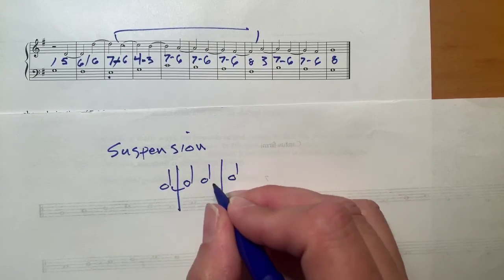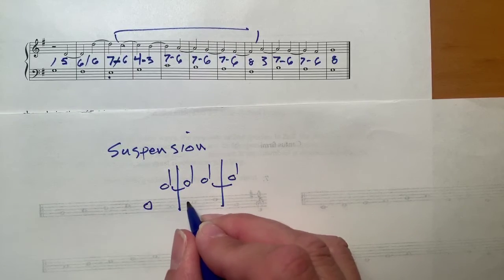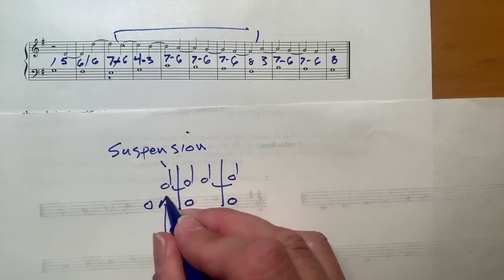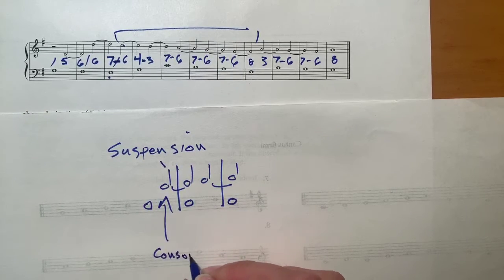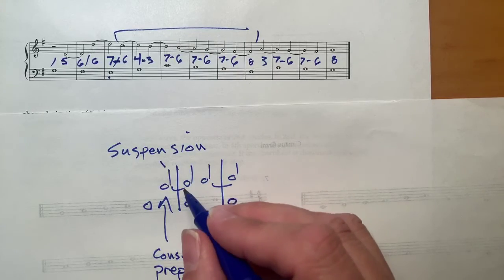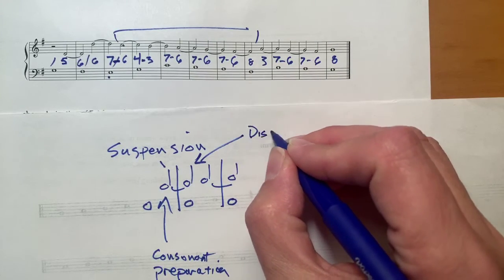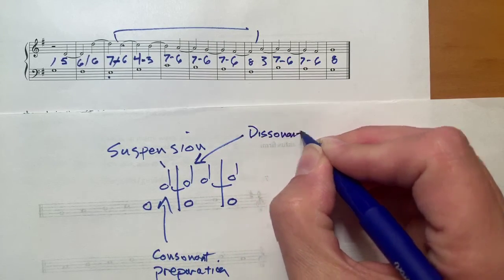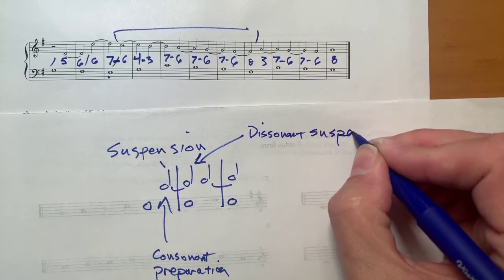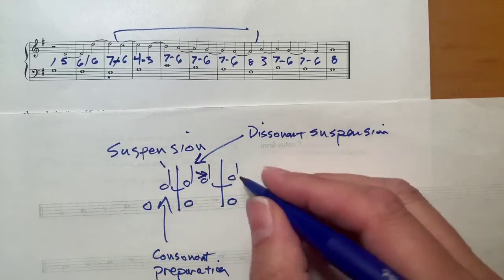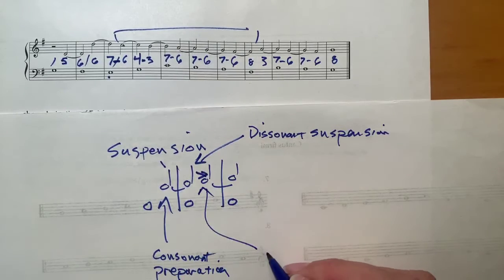You have here the consonant preparation, then tied across the bar line. The note can become a dissonant suspension. And then it must resolve down by step to the resolution.